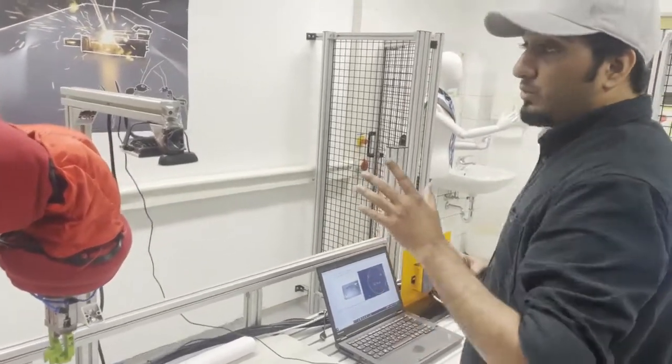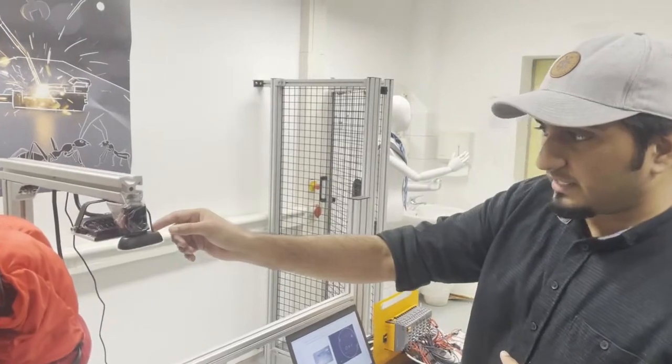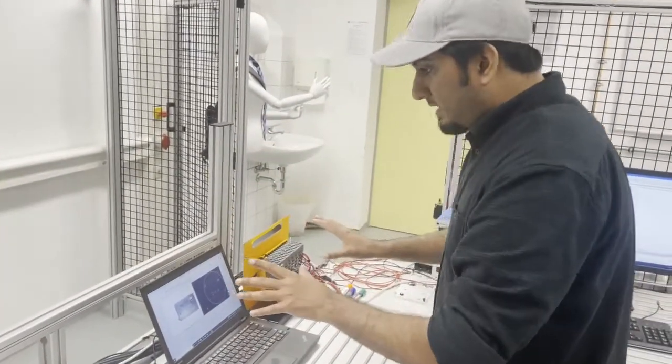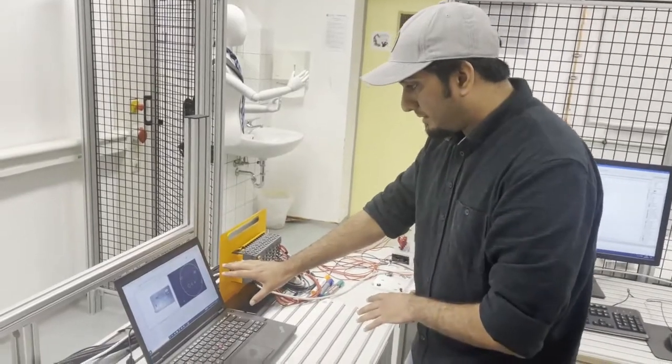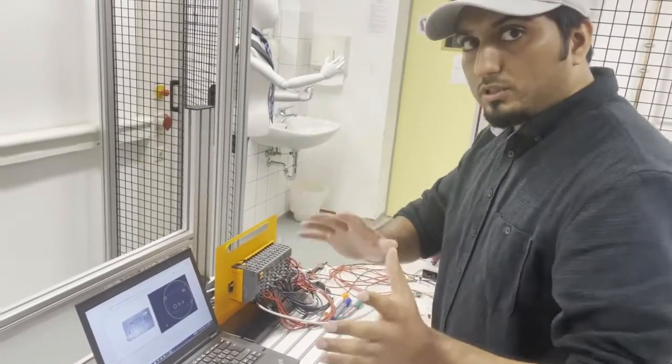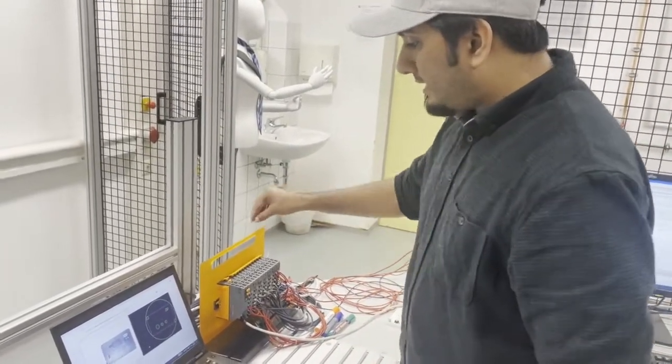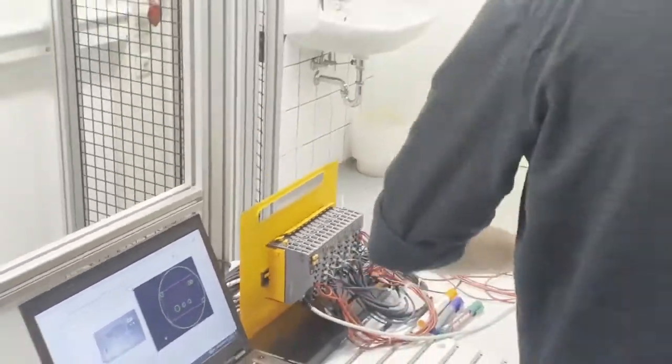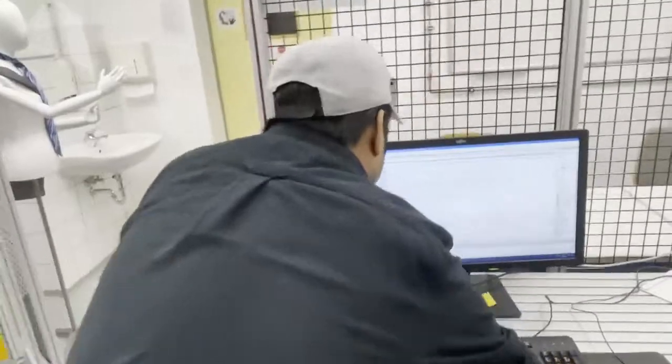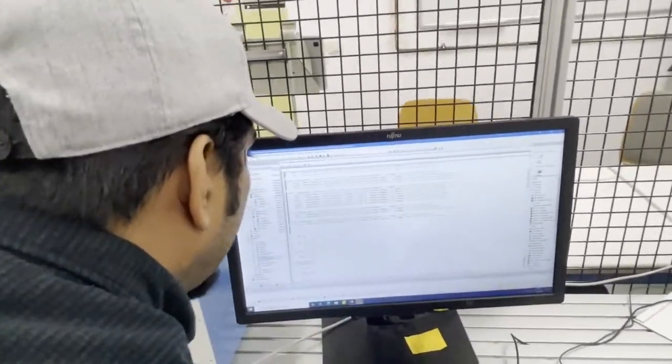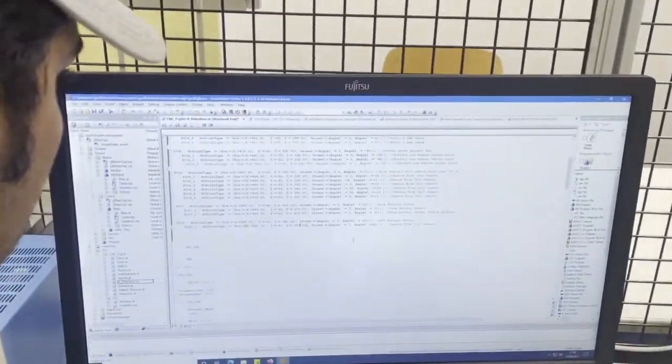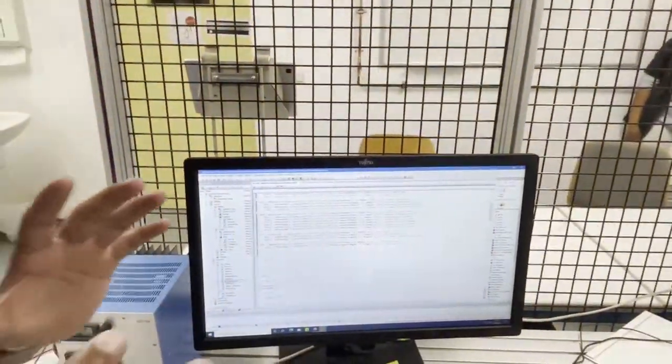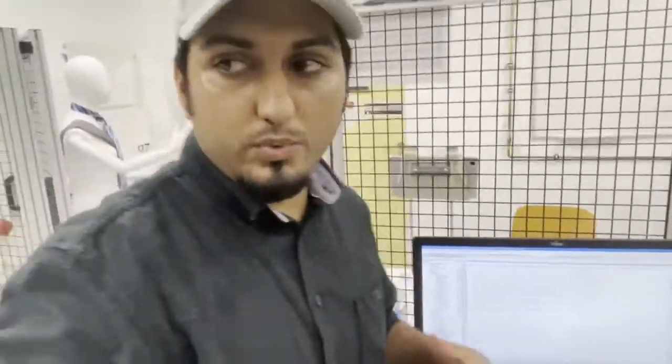For the vision sensor, we are using a Logitech webcam. As you can see, this is the setup for the image processing. To control the robot, we are using a BNR PLC, and to program this PLC, we are using the software by BNR, which is known as Automation Studio. This is the short overview of the equipment we are using.